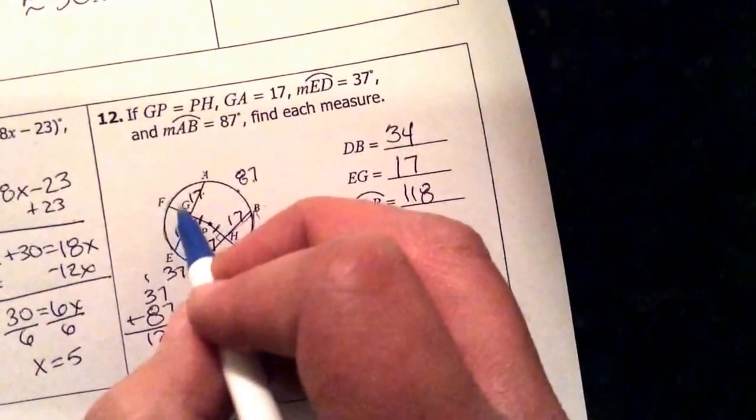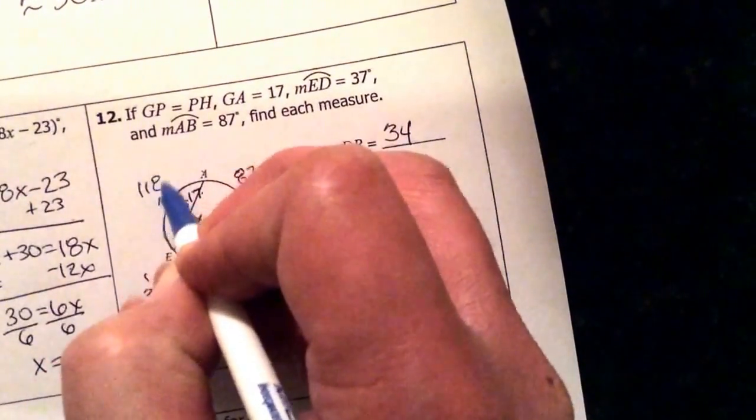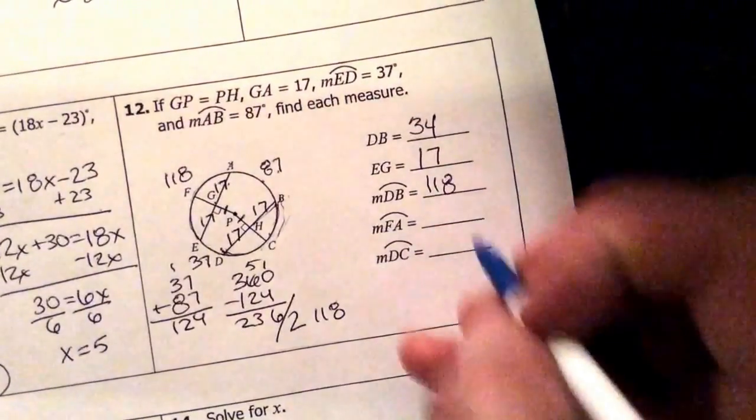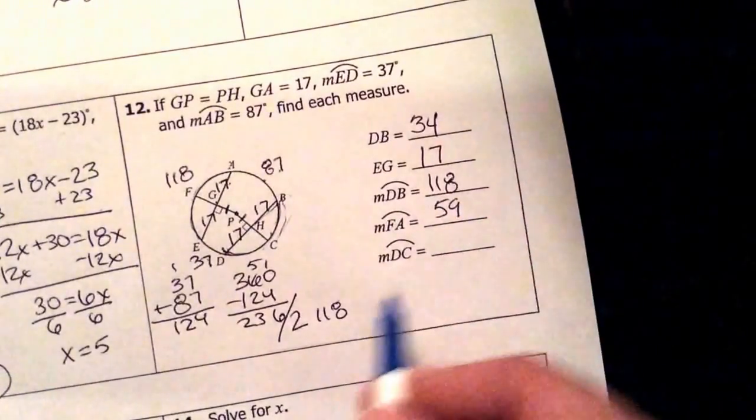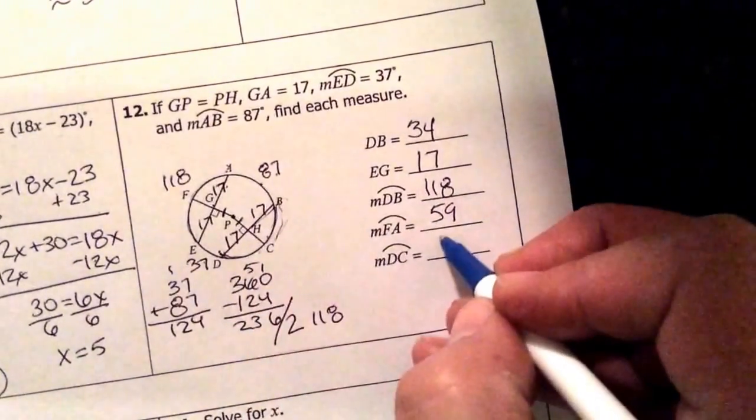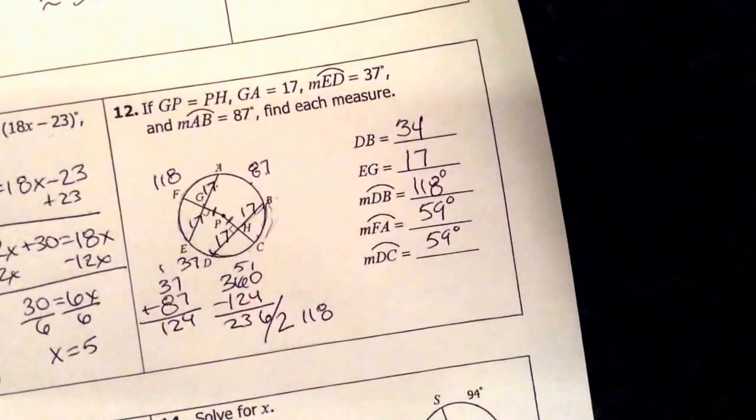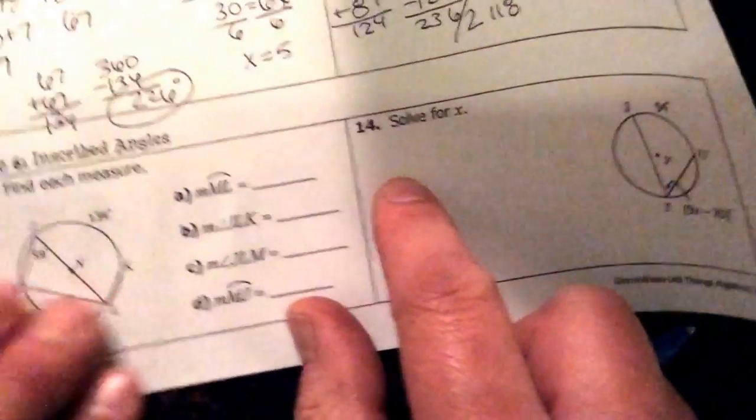So if we're looking for FA and the entire thing is 118, we find FA by cutting that in half. That's 59. And DC is also going to be 59. Again, these guys are in degrees right here.